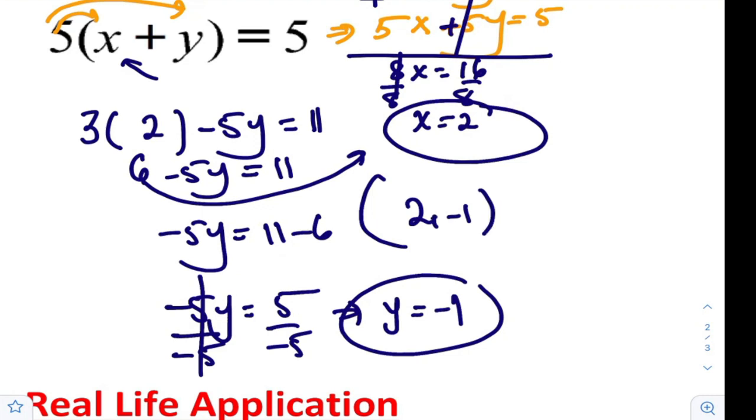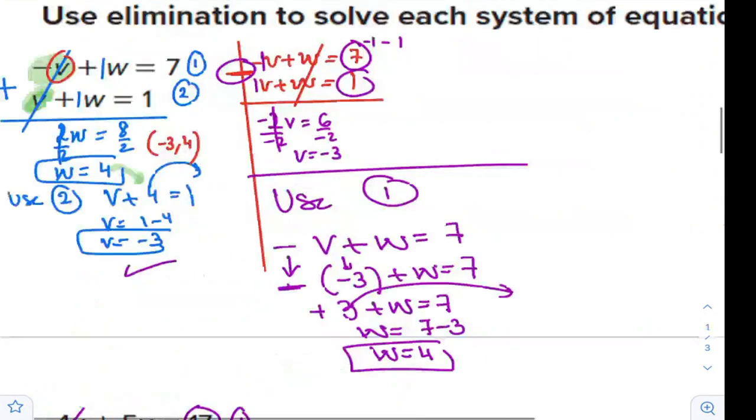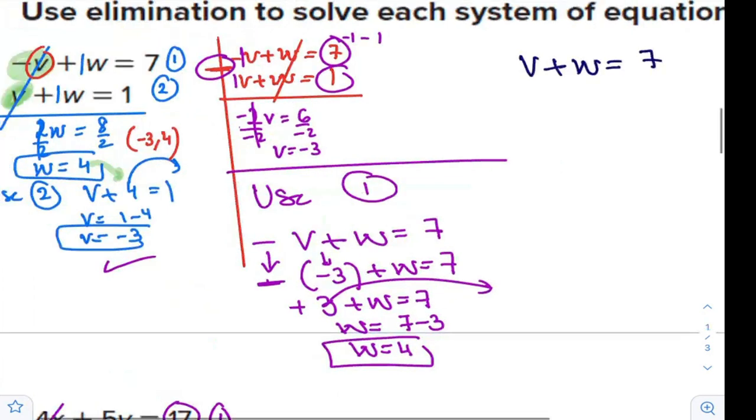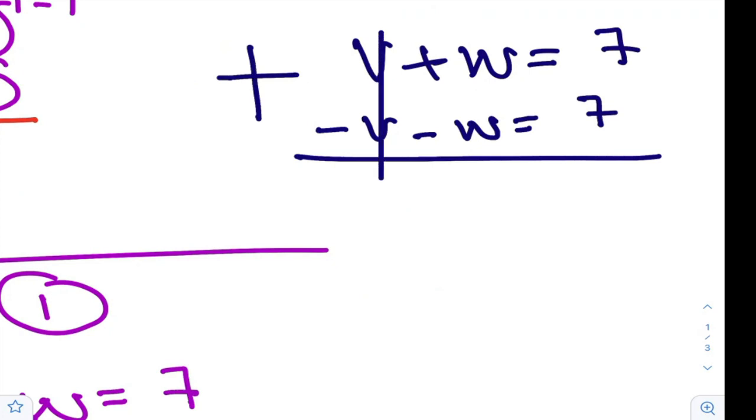We have one solution. This system is, if you remember, consistent and independent. Can we have infinitely many solutions? Can it appear by elimination? Let's modify this example. For example, if you have negative v minus w equals negative 7. If you decide to add to eliminate, what will happen? V plus negative V is 0, W plus negative W is 0, so this side is 0. Now 7 plus 7 is 14. Now we end up with an equation with no variable.